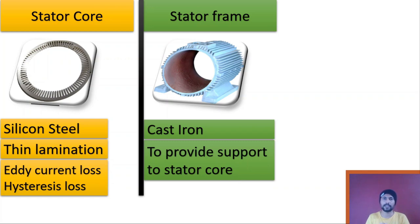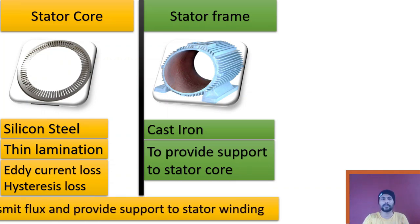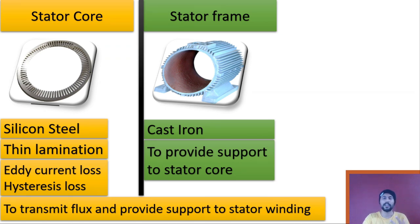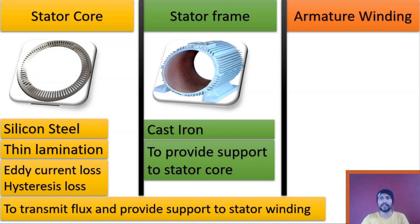Because of silicon steel we can reduce hysteresis loss, and by using thin laminations we can reduce eddy current loss. If you want to know how silicon steel and thin laminations reduce these losses, there is a separate video for that and the link is provided in the description. The main functions of the stator core are to transmit flux throughout the full stator body and to provide support to the stator winding.